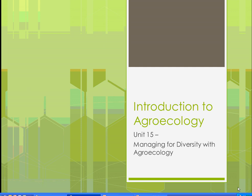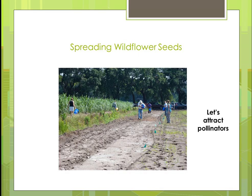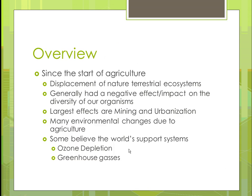Welcome back to Introduction to Agroecology. We're going to cover Unit 15, Managing for Diversity with Agroecology. Here is a picture to start with where they're actually putting wildflowers down in order to promote diversity. There's a crop up to the left where two people are walking right along it. This is an area that's been prepared, and they're putting some wildflower seeds down, which is going to attract pollinators to help create some of that diversity.